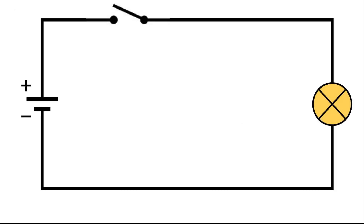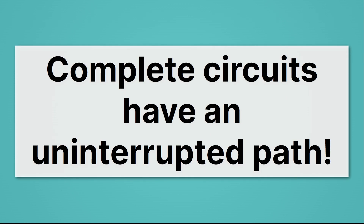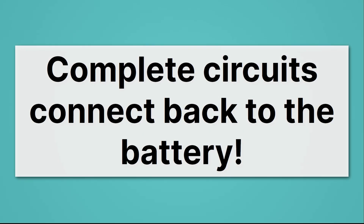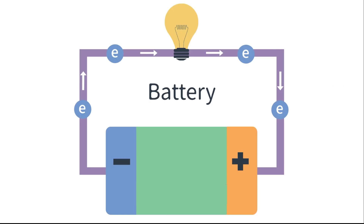Here we have an open circuit where there would be no light at all. The reason the light would turn off is that to work, circuits must be complete. Complete circuits have an uninterrupted path — you can draw a line all the way through the wire and never lift up your pencil. Complete circuits connect those electrons all the way back to the battery. The electrons flow from the negative side of the battery all the way back to the positive, because electrons are negative and flow from negative to positive.